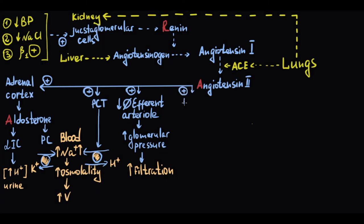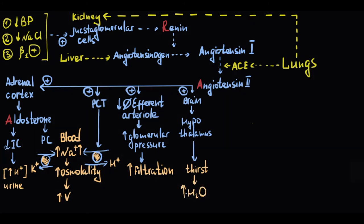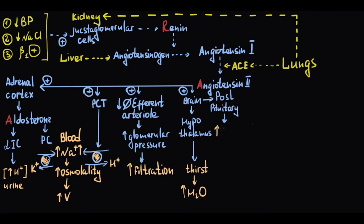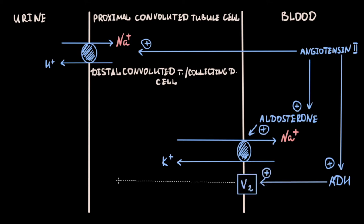Angiotensin-2 acts on the brain with three effects. First, it binds to the hypothalamus, stimulating thirst and increasing water intake from the GI tract. Second, it stimulates the release of antidiuretic hormone (ADH) by the posterior pituitary. Third, ADH works through V2 receptors to increase water absorption in the kidney by inserting aquaporin channels at the collecting duct.